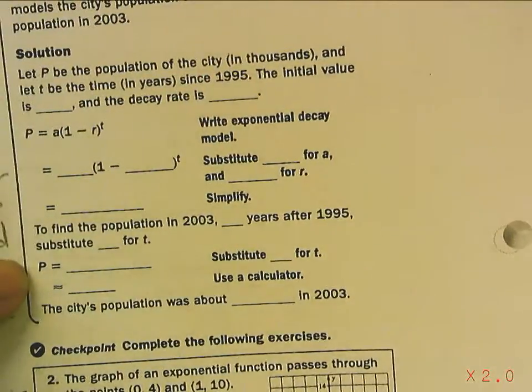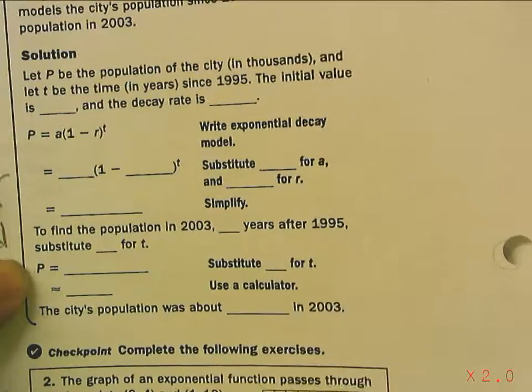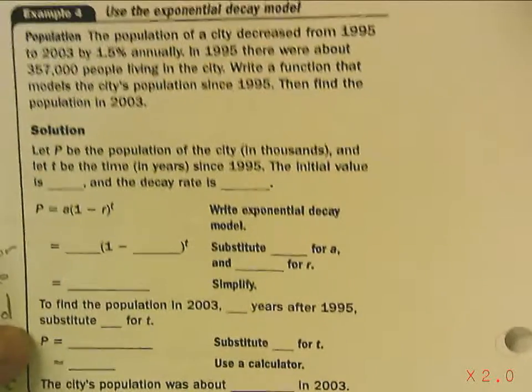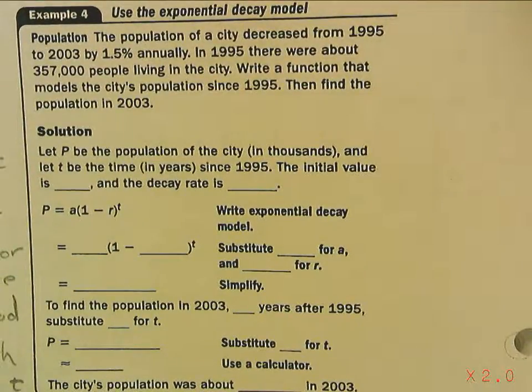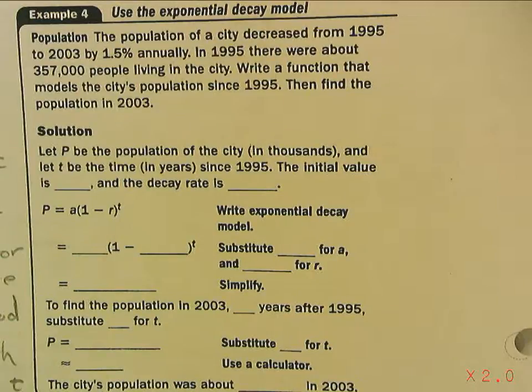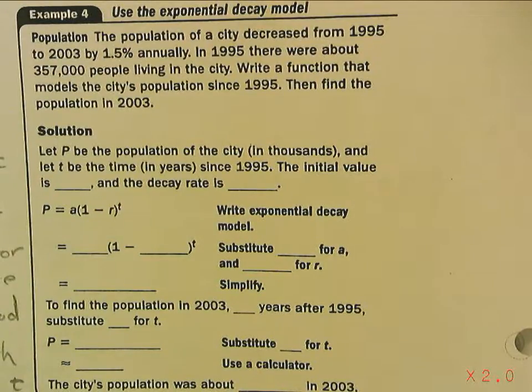Now, we're going to go over one of these word problems on page 54. This says population. The population of a city decreased from 1995 to 2003 by 1.5% annually. In 1995, there were about 357,000 people living in the city. Write a function that models the city's population since 1995, then find the population.